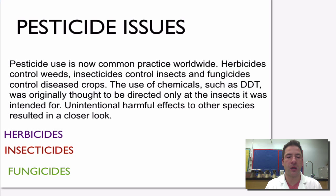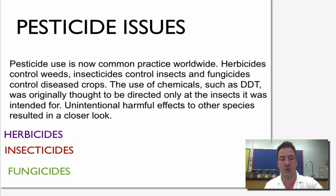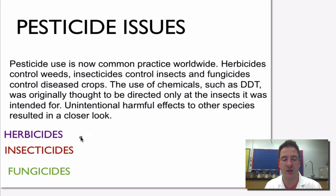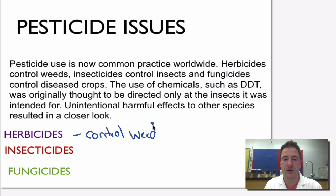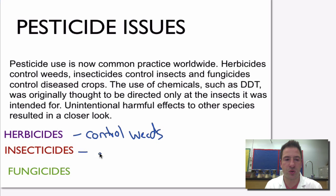Moving on — pesticide issues. Pesticides are something that we see used worldwide and it's becoming very common to use them. Herbicides, insecticides, and fungicides are commonly used — for example, on golf courses. Herbicides are going to control weeds, such as dandelions on a golf course. I've actually applied herbicides for the county back in my hometown to control noxious weeds such as tansy and thistle.